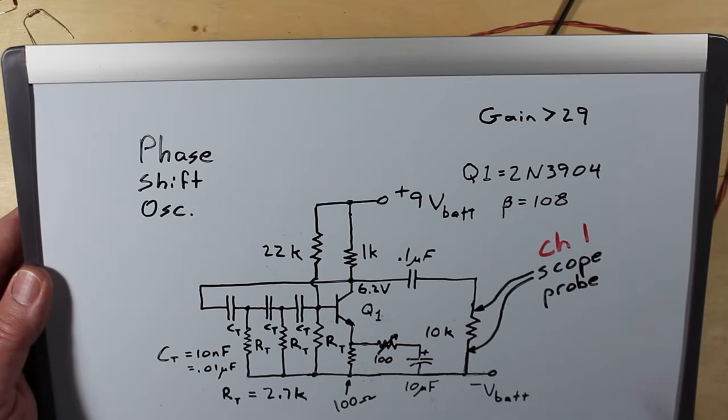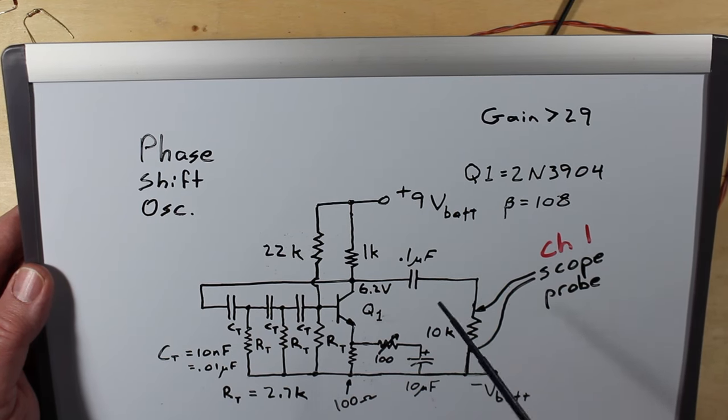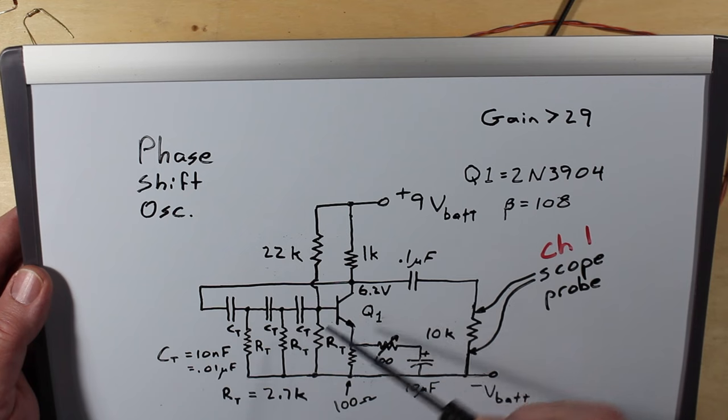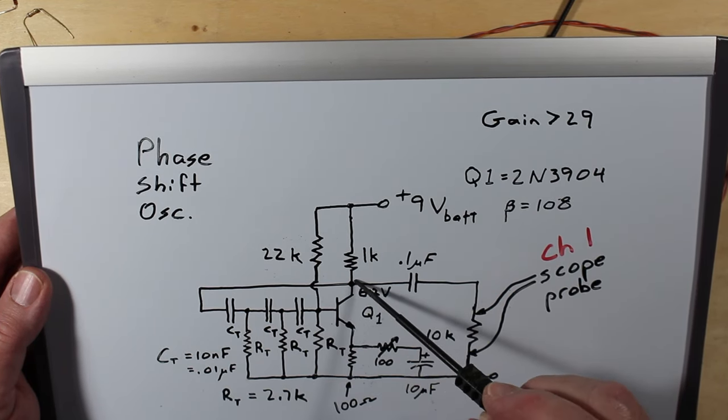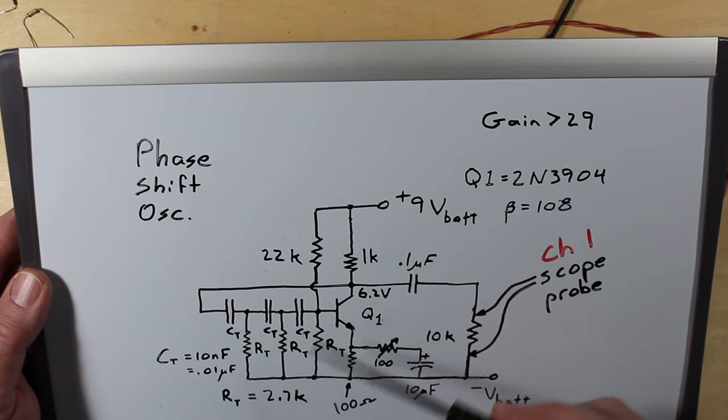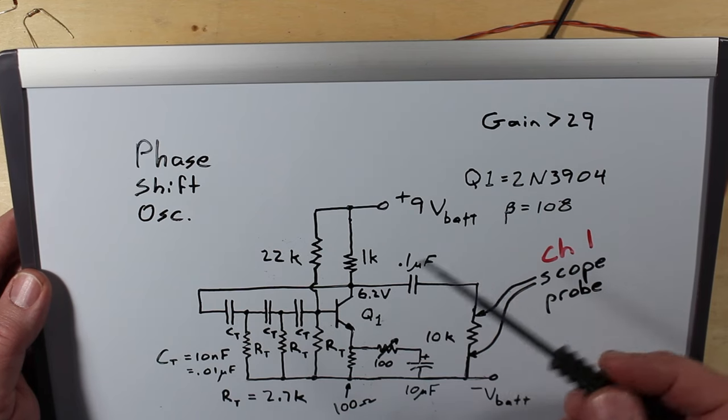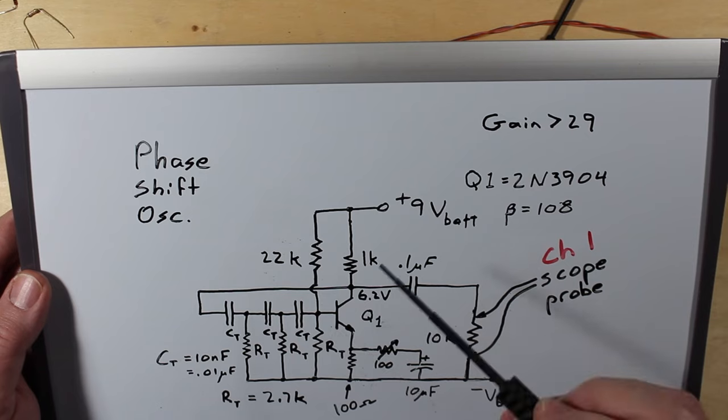So one other thing I wanted to briefly go over here is how does this oscillate? How do we get this thing to oscillate? Well, you need to feed back into this part of the circuit right here, a small amount of what comes out on this side. And this transistor already gives you 180 degrees of phase shift. We need 360. So it has to be given those little nudges at exactly the right time.